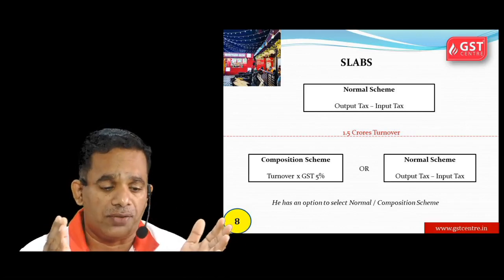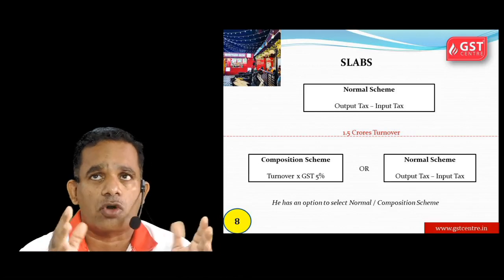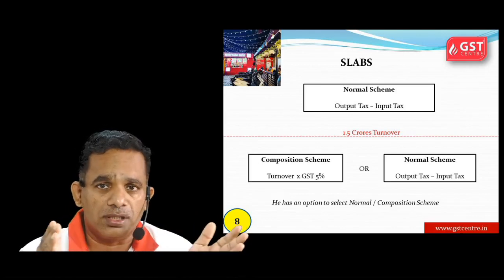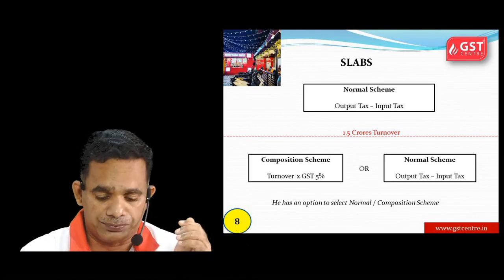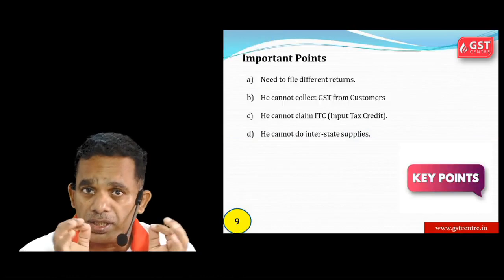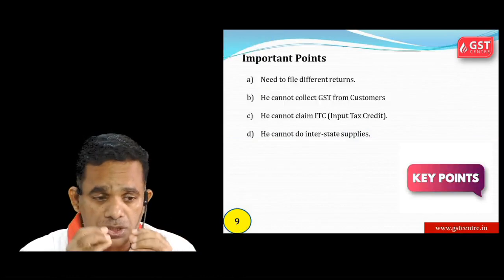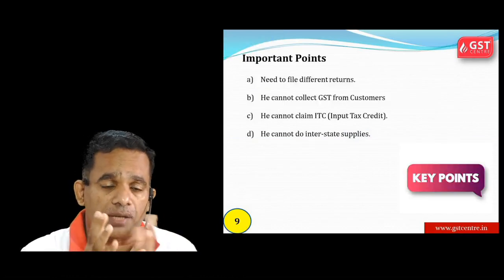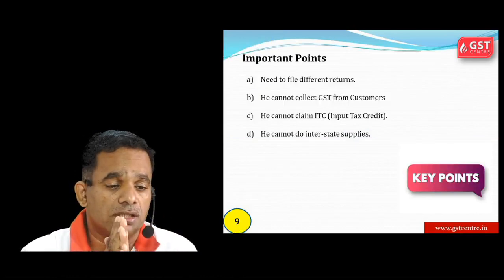अगर आपका turnover 1.5 crores के नीचे है तो आपको option रहता है कि composition scheme चुन सकते हैं, नहीं तो normal scheme भी चुन सकते हैं। अगर 1.5 crores के ऊपर जाएगा तो normal scheme ही select करना होगा, जिसमें output tax minus input tax formula apply होगा।